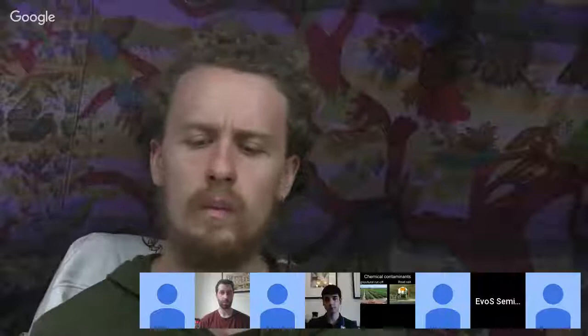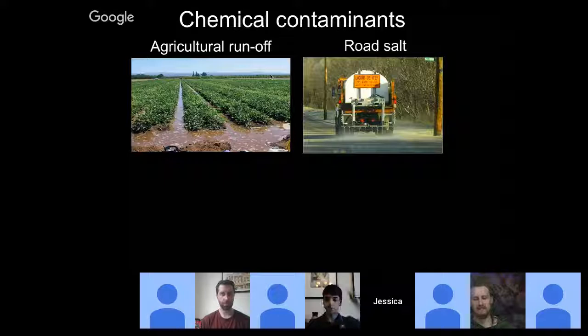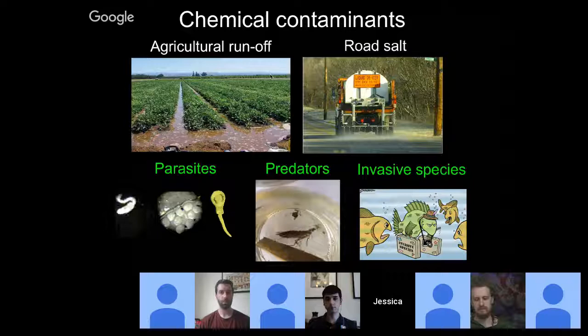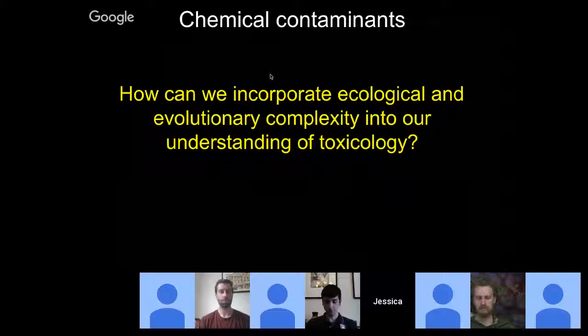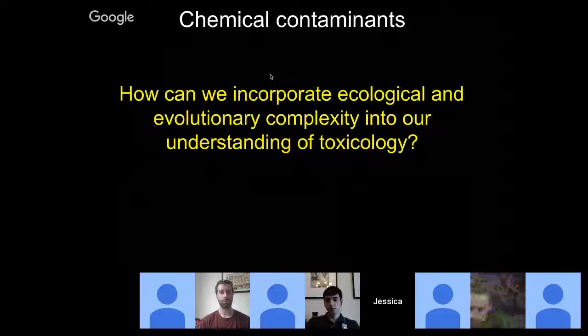These traditional tests are fairly basic — you have a single organism in a petri dish. But nature is way more complex. If you want to understand what agricultural runoff or road salt actually do, you need to add ecological complexity. Organisms in nature experience other stressors such as parasites, predators, and invasive species. The question is: how do we understand the effect of contaminants when you integrate this ecological complexity?